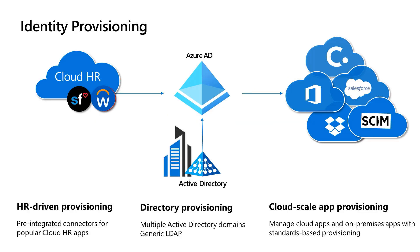Governance starts with ensuring that your users are accurately represented throughout your ecosystem, so that you can authenticate them, authorize their access requests, and audit their activities, which are all key to secure productivity. To significantly improve the timeliness and accuracy of managing identity-related objects throughout your ecosystem, we rely on automation as much as possible. Azure AD provides you with a single platform that can provision identities between your HR system, your identity directories, and your applications.